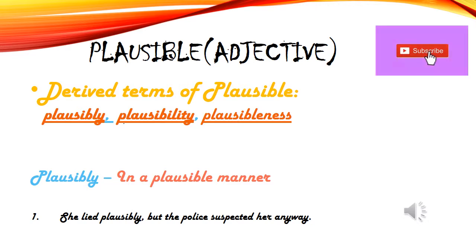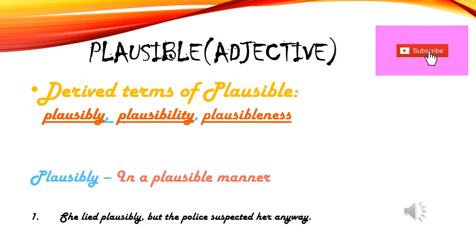Ab plausible ke derived terms dekhte hain — teen hain: plausibly, plausibility, aur plausibleness. Plausibly means 'in a plausible manner' — aisa kehna jaise hum sahi hi keh rahe hain. Example: She spoke plausibly, but the police suspected her anyway.